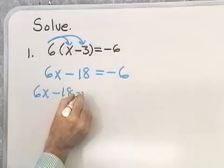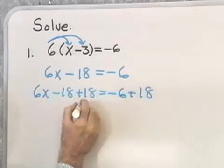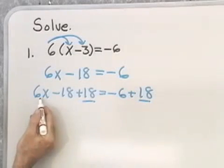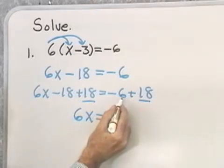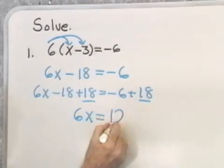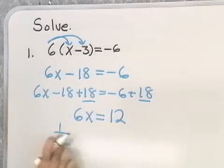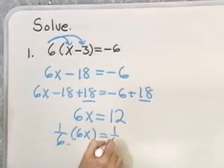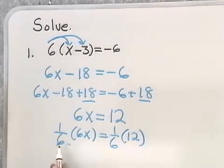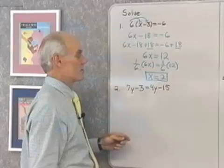So I need to add the opposite of this term to both sides: 6x minus 18 plus 18 equals negative 6 plus 18. I've added 18 to both sides. 6x plus negative 18 plus 18 is simply 6x, and negative 6 plus 18 is 12. Next, I use the multiplication property: 1/6 times 6x on the left, 1/6 times 12 on the right. 1/6 of 6x is x, and 1/6 of 12 is 2. So x equals 2.